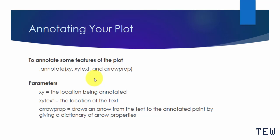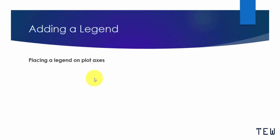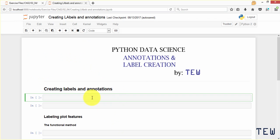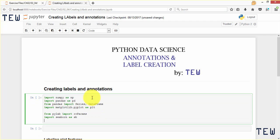Adding legends to data graphics is of course very useful, so we will use the dot legend method and pass in a label parameter for the variables or categories we are labeling, and a location parameter for where we want that legend to be added. Let's get to work doing this in Python — we are going to use NumPy and pandas as usual, so we will import those libraries.